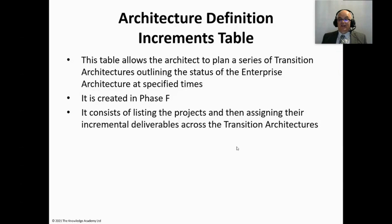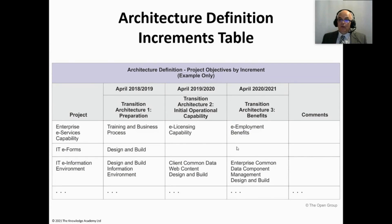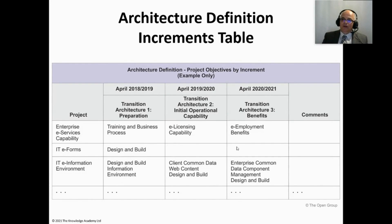The architecture definition increments table allows the architect to plan a series of transition architectures, outlining the status of the enterprise architectures at specified times. Created in Phase F, it consists of listing the projects and then assigning incremental deliverables across the transition architectures. It's a bit of a chicken-and-egg situation: you define the transition architectures and state what the deliverables will be at those points, but you're also defining the transition architecture points based on the completion of certain work and delivery of key deliverables.